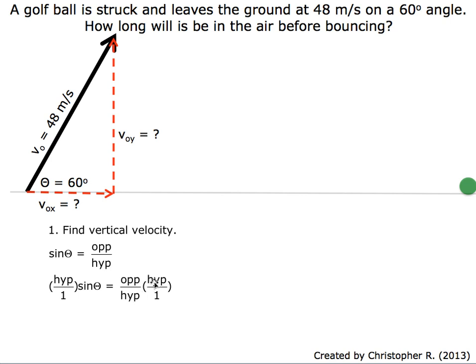We're going to multiply both sides by hypotenuse over one. The hypotenuses cancel out, we're left with opposite on the right, and on the left side we've got hypotenuse times sine of the angle.